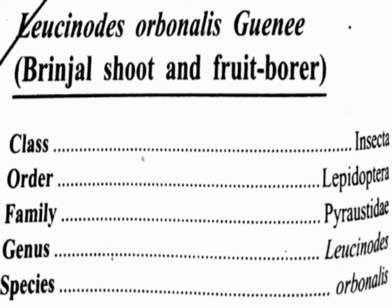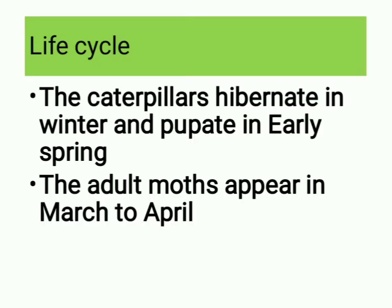Class is Insecta, order Lepidoptera, family Pyralidae, genus Leucinodes, species orbonalis. Life cycle: the caterpillars hibernate in winter and pupate in early spring. The adult moths appear in March to April.